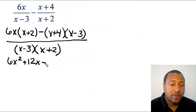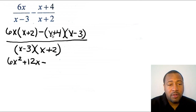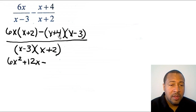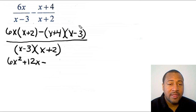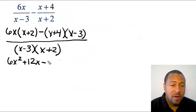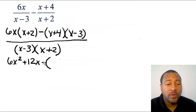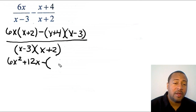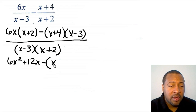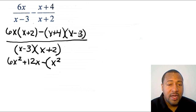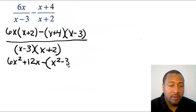For the (x + 4)(x − 3) part, I would have to FOIL. FOIL means multiply the two fronts, multiply the two outside numbers, multiply the two inner numbers, and then multiply the two last numbers. So: x times x gives x squared; the two outer terms, x times negative 3, give negative 3x; the two inner terms, 4 times x, give positive 4x.